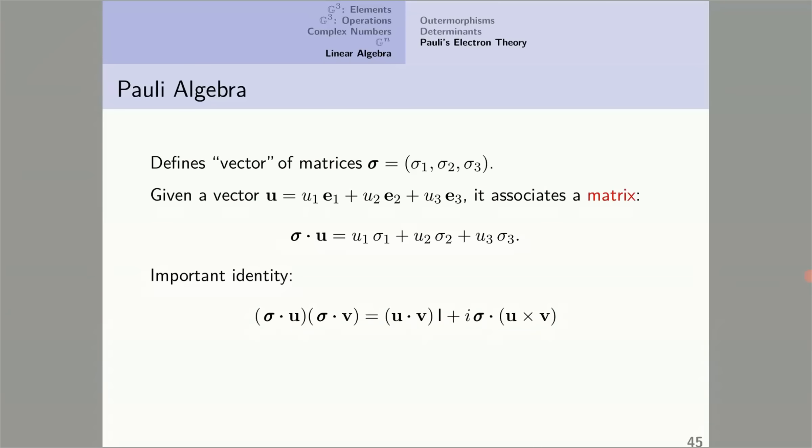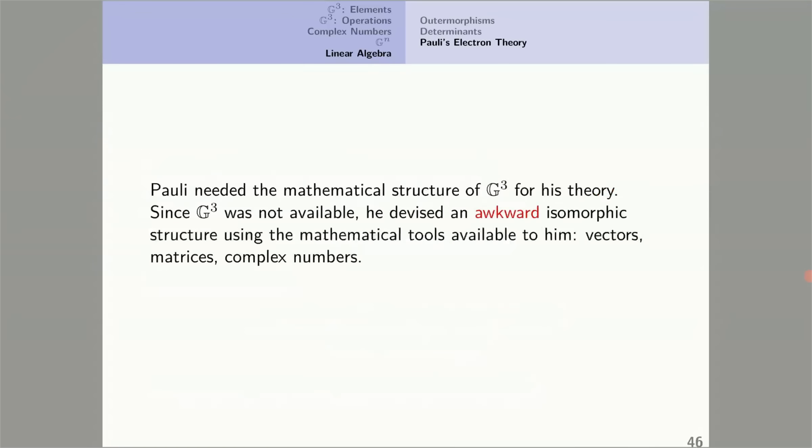Here is an important identity within the Pauli algebra. It's a clumsy way to express a fundamental idea, because if you translate this into geometric algebra, you get nothing other than the fundamental identity of geometric algebra. Pauli needed the mathematical structure of G^3 for his theory. Since it wasn't available, he devised an awkward isomorphic structure using the mathematical tools available to him: vectors, matrices, complex numbers.